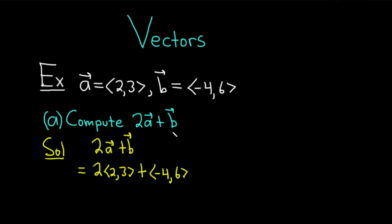All we've done so far is just write down the problem again and replace a with what it actually is, which is 2, 3, and b with negative 4, 6. Now what we can do is we can do something with this 2. So whenever you have a number outside of a vector like this and you're multiplying it by the vector, you actually just multiply the number by each of the components. It's really easy.